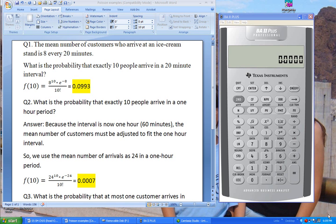Today I'm going to show you how to use the Texas Instrument BA2 Plus calculator to make calculations for the Poisson distribution. Let's take this example.